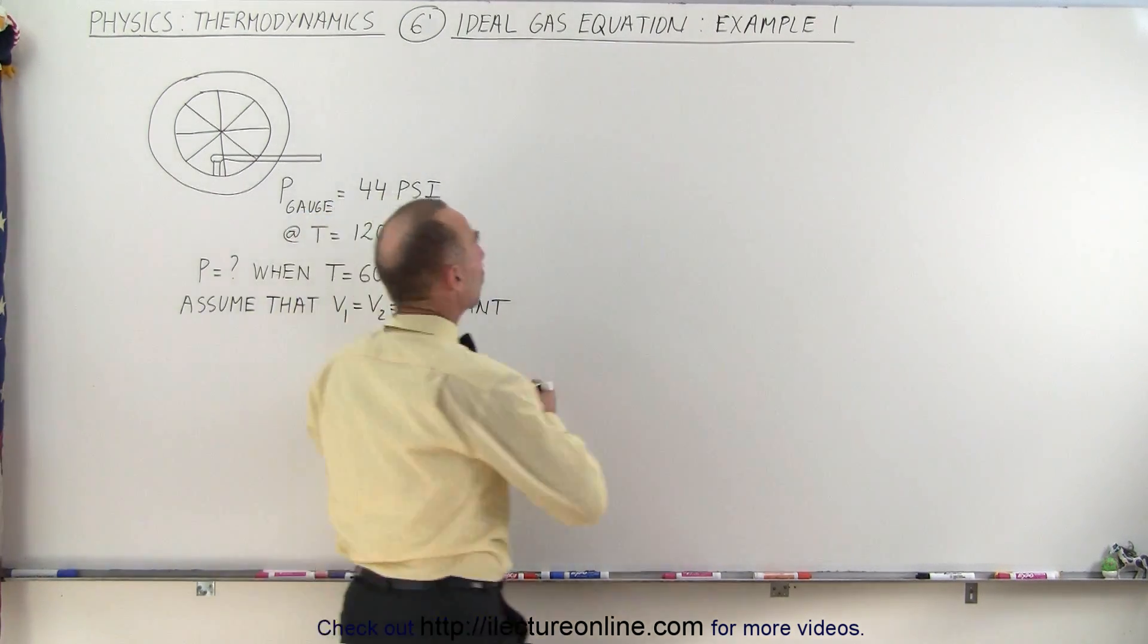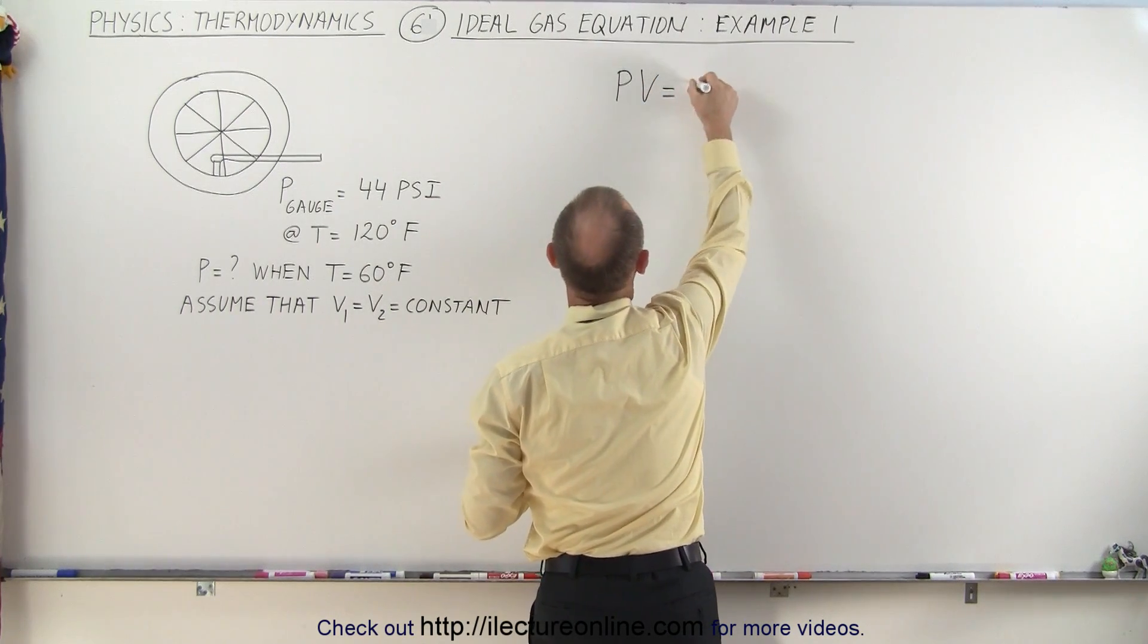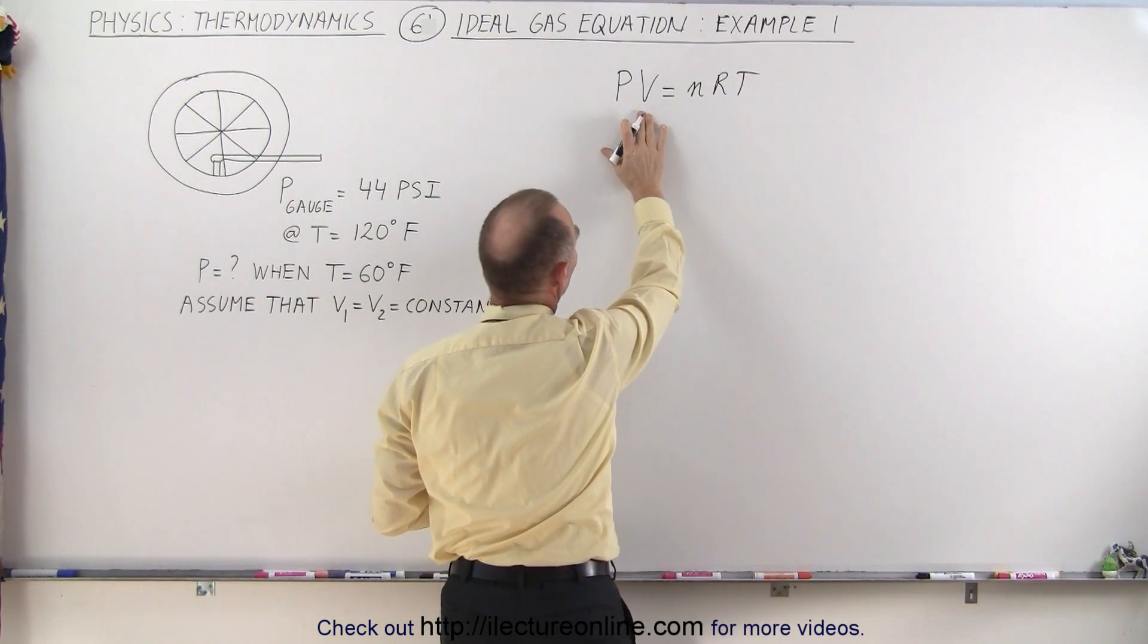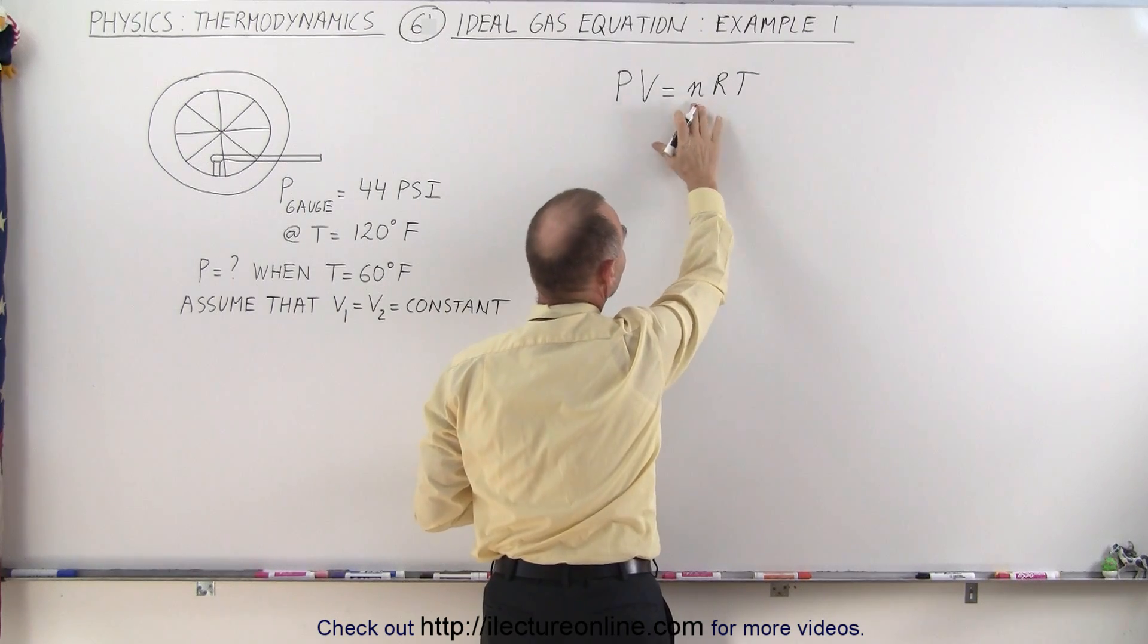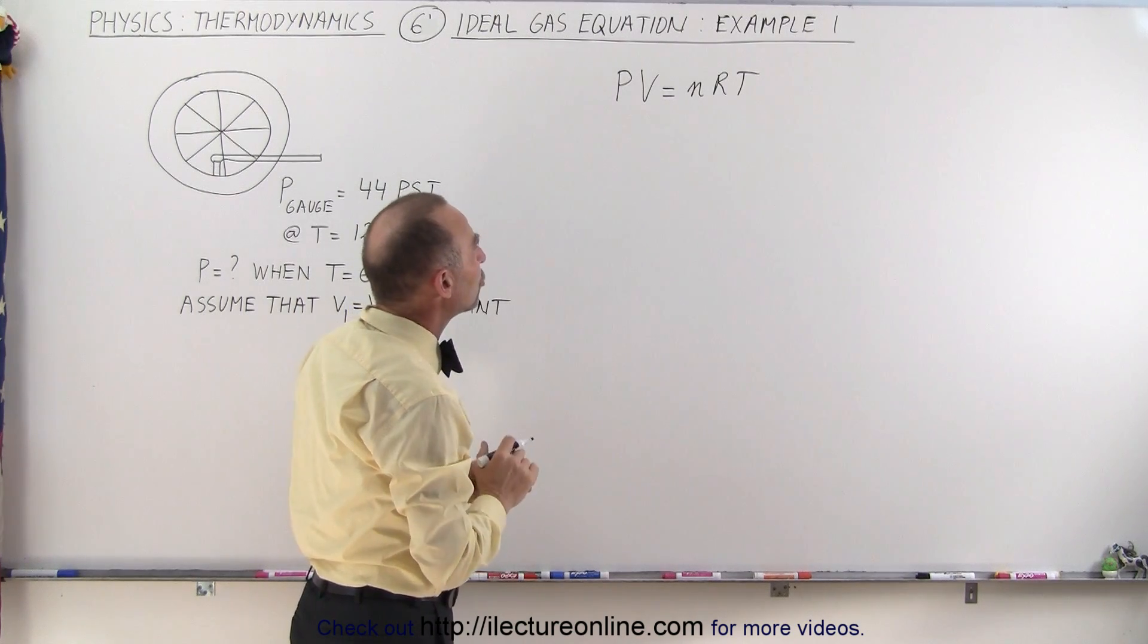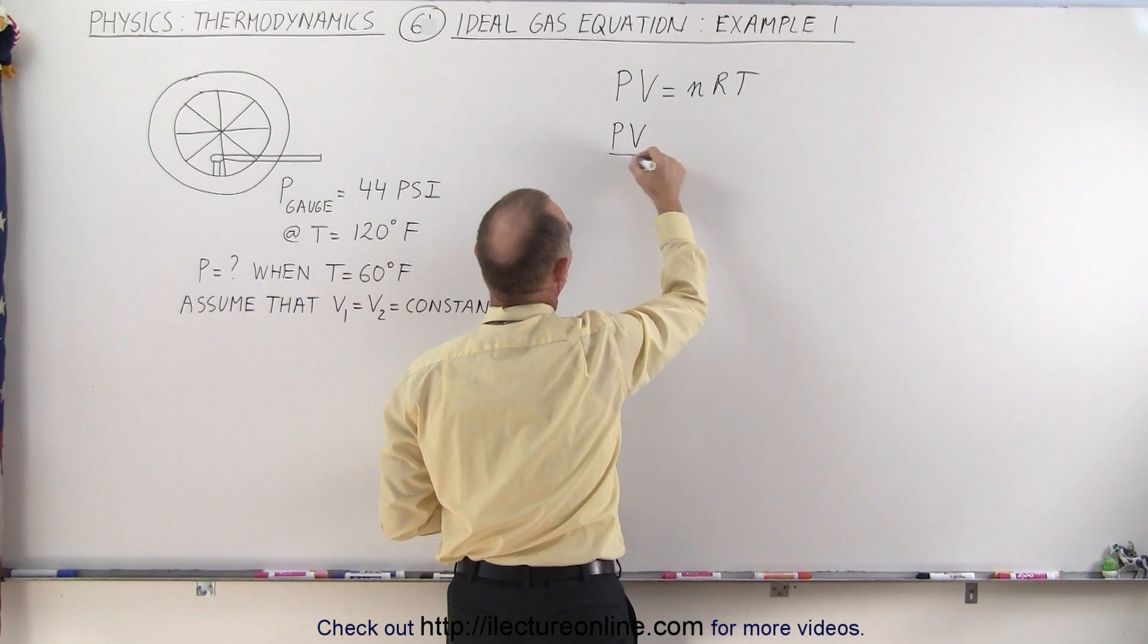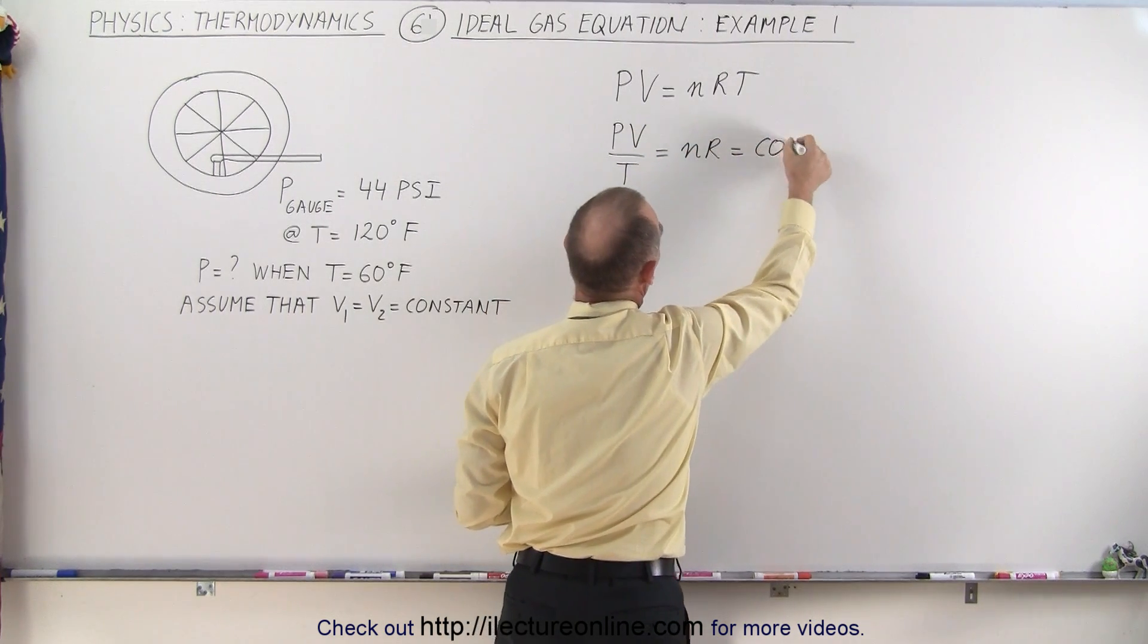Now, the ideal gas equation is as follows: PV equals nRT, where P is the pressure, V is the volume, T is the temperature, R is the gas constant, and N is the number of moles. Assuming that N and R will remain constant, typically what you would do is write as follows: P times V divided by the temperature is equal to nR, which is therefore equal to a constant.